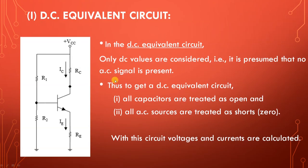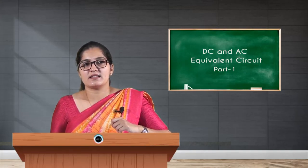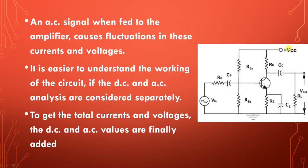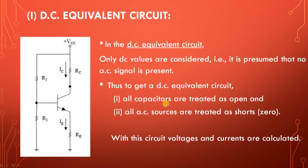There are two conditions to obtain the DC equivalent circuit from the original circuit. First, only DC values are considered — it is pre-assumed that no AC signal is present. To get a DC equivalent circuit, all capacitors are treated as open and all AC sources are treated as shorts.